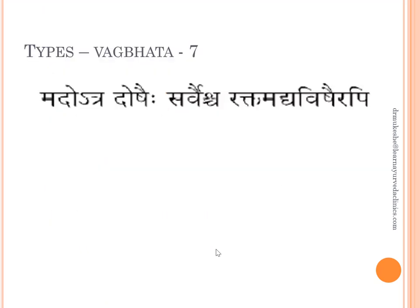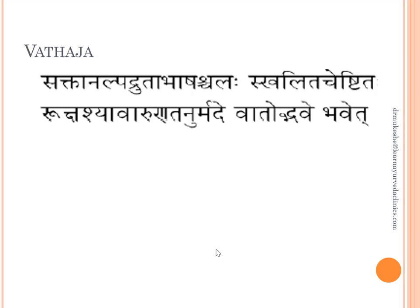The classification according to Vagbhata is 7. First is Vataja: 'Saktha Analpa Drudha Bhasha, Chalas Khalida Cheshtita, Rokshashyavaruna Tanur, Madhe Vata Udbhavet.' So the speech will be Saktha Analpa Drudha — either obstructed or uncontrolled speech. Then Chalas Khalida Cheshtita — there will be involuntary movements or restlessness in the body. Rokshashyavaruna Tanur — the body will have a tinge of Shyavaruna color. These are manifestations that help us identify the Dosha predominance in Vataja Mada.